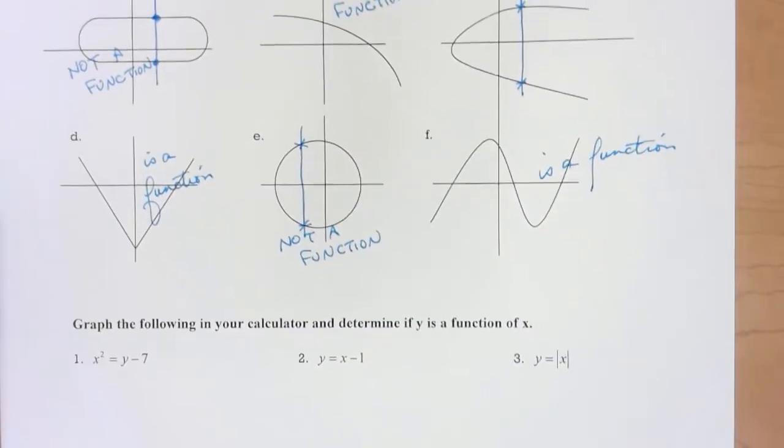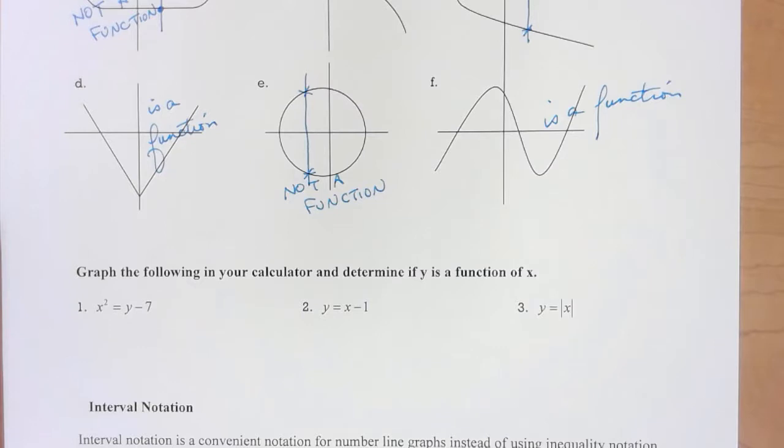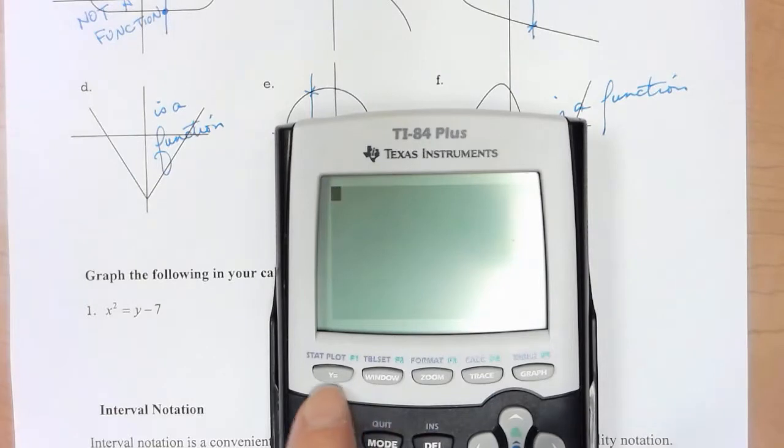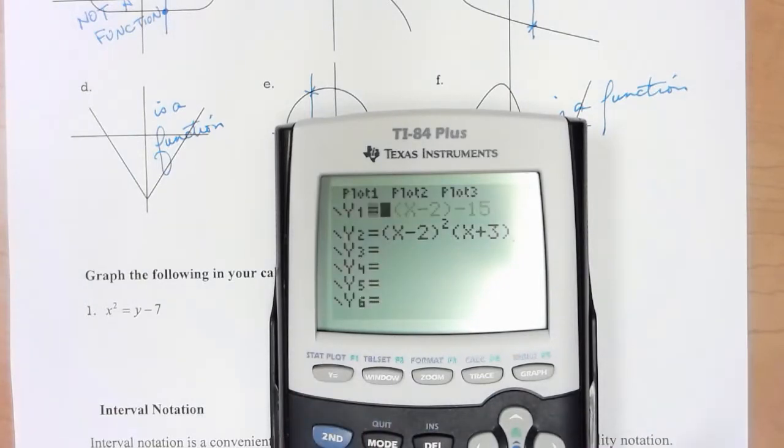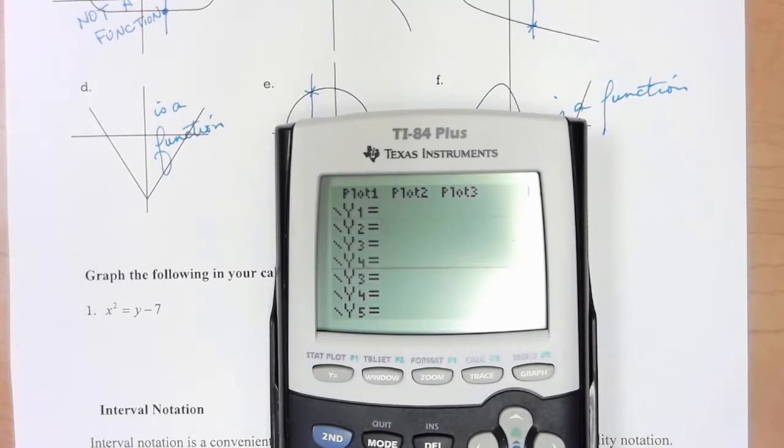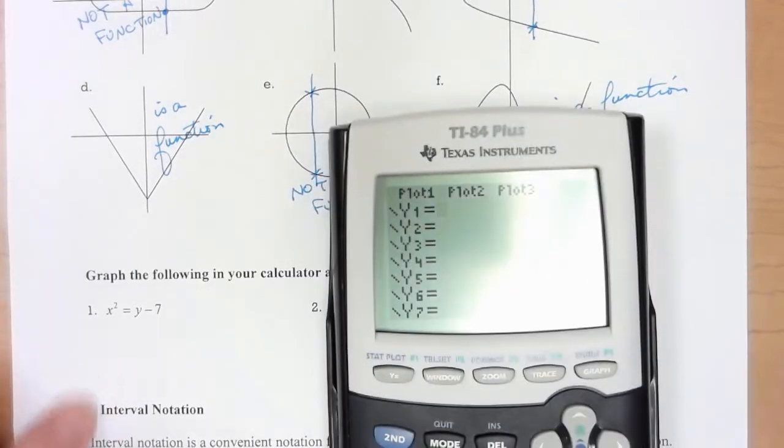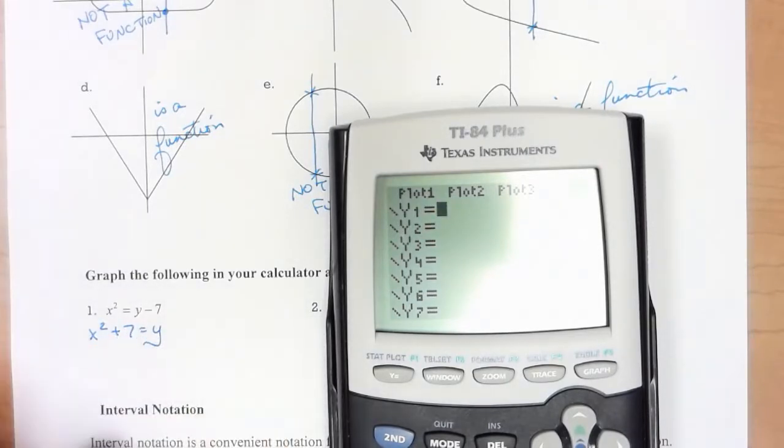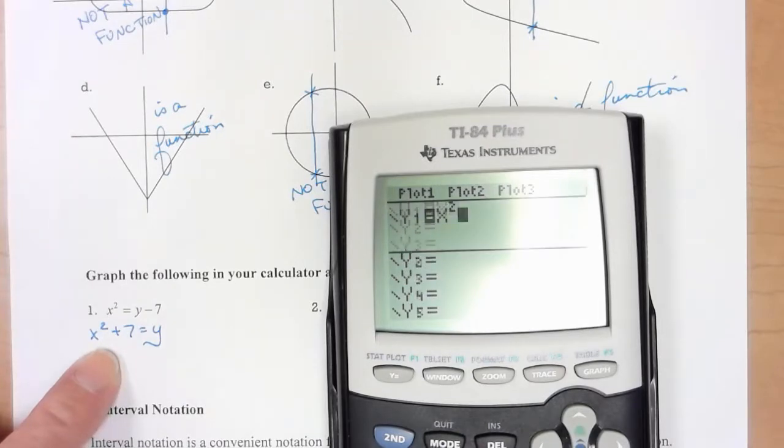Now it says graph the following in your calculator and determine if y is a function of x. In order for you to put graphs in your calculator you have to be in the form of y equals. So I've got to solve this one for y. If I solve it for y I've got x squared plus 7 is equal to y. So I put in my x squared plus 7. Let me graph it.